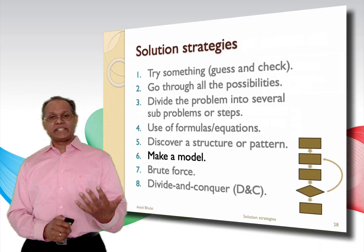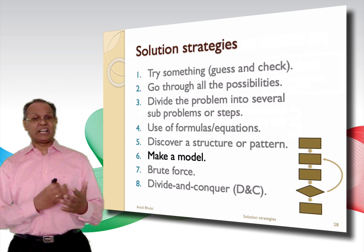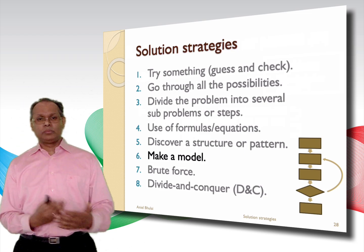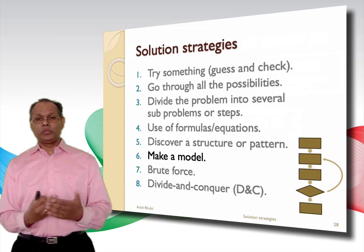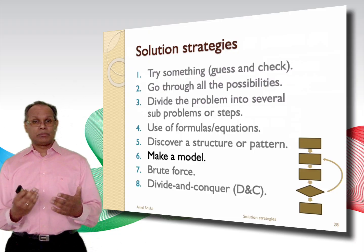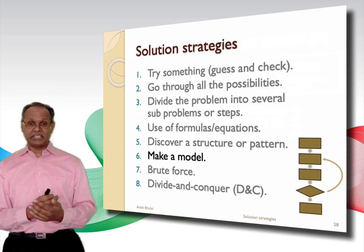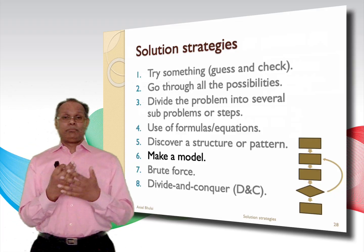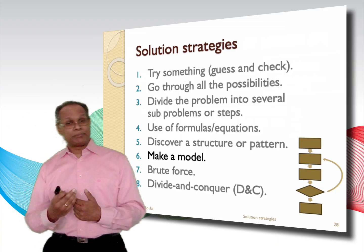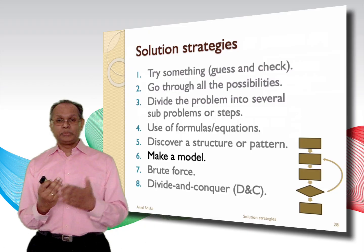The next solution strategy in the list is make a model. Often mathematical models are used to solve complex problems. When we make a model of a problem, we omit factors or aspects which make the problem complex. By doing so, we get a simpler problem or situation which can often be solved by known and simple techniques. When making a model, you can think of, for example, making a diagram or drawing a picture. By using such a model, you can discover things that may help you to solve the problem.